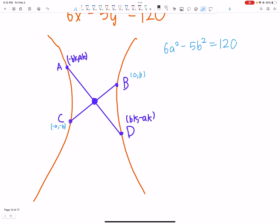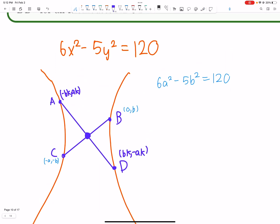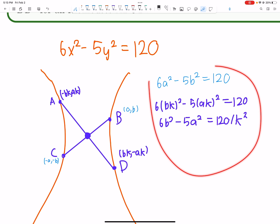If (bk, -ak) is also on the hyperbola, then 6(bk)² - 5(ak)² = 120, which gives 6b² - 5a² = 120/k². The tricky part is understanding k - it can be anything, theoretically even a million. Many people got stuck here.